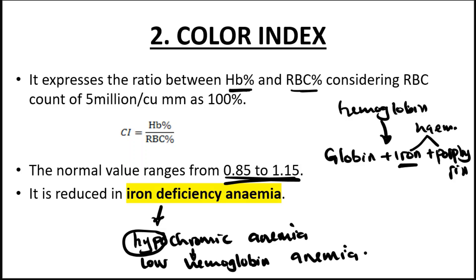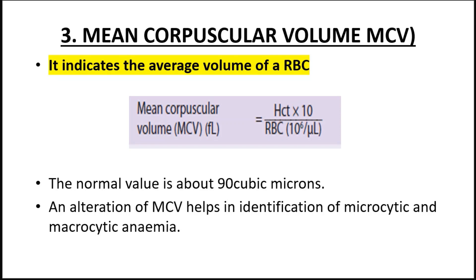If you have low iron in your body, you're going to have low hemoglobin, hence your color index is going to be low — that's hypochromic anemia. Your red blood cells are also going to be small, so it can also be termed microcytic anemia. Low iron leads to both hypochromic and microcytic anemia.